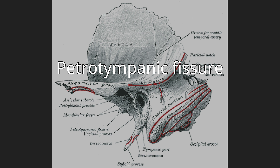It opens just above and in front of the ring of bone into which the tympanic membrane is inserted. In this situation, it is a mere slit about 2 mm in length. It lodges the anterior process and anterior ligament of the malleus, and gives passage to the anterior tympanic branch of the internal maxillary artery.